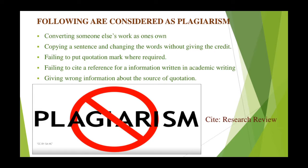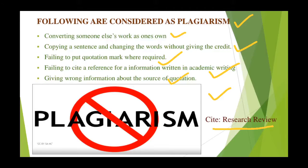What are the different ways by which you can detect plagiarism — how will you understand what constitutes plagiarism? The list includes: converting someone else's work as your own; copying a sentence and changing words without giving credit; failing to put quotation marks, which is very important; failing to cite a reference for information in academic writing; and giving wrong information about the source. For example, if I use a picture without citing its source, that is plagiarism.